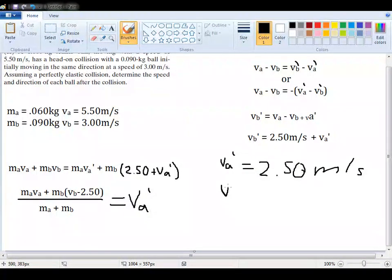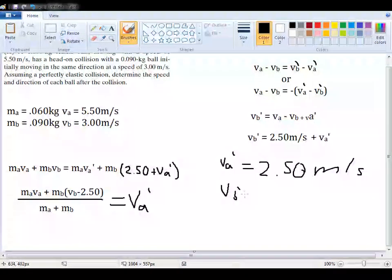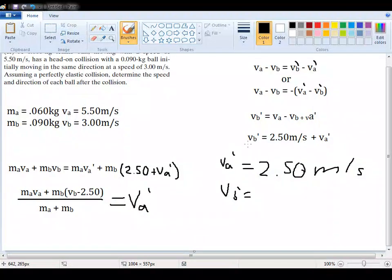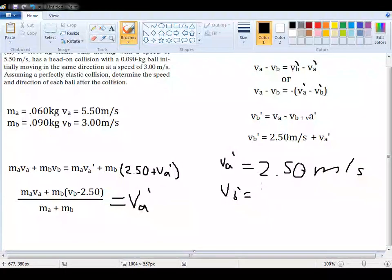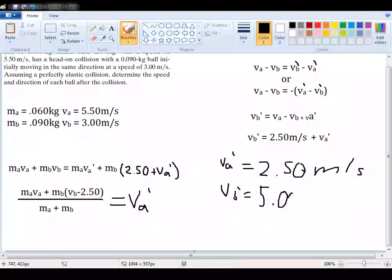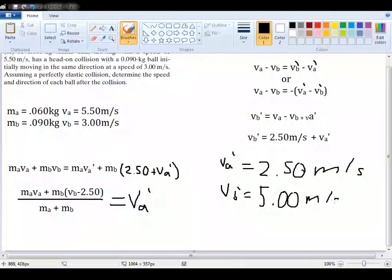And now for VB prime, which is still the other thing we need to find, we already have a formula for that right here. So, just all you need to do is add 2.5 meters per second, plus what we just calculated for VA prime, and that should pretty clearly get you 5.00 meters per second for speed.